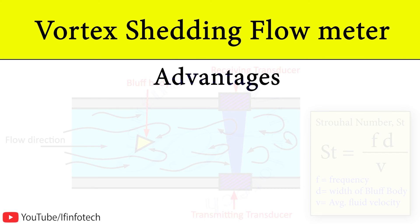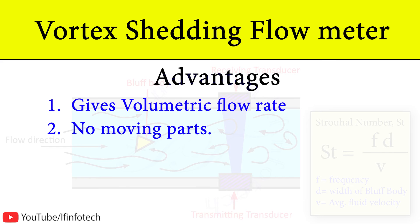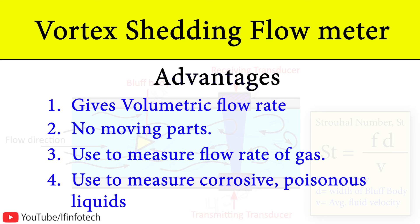The vortex shedding flow meter gives volumetric flow rate, and there are no moving parts. It can also be used to measure flow rate of gas and to measure corrosive and poisonous liquids.